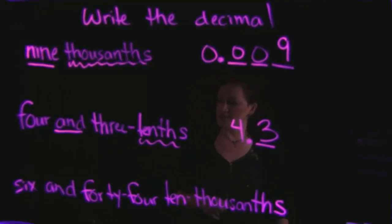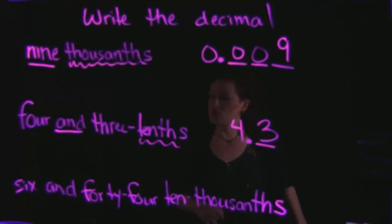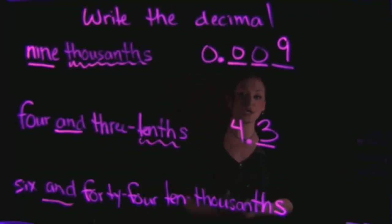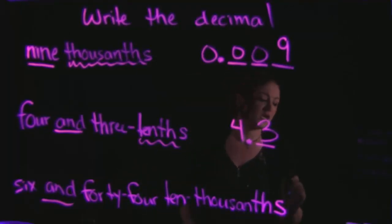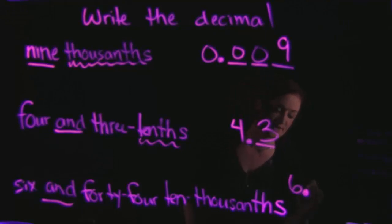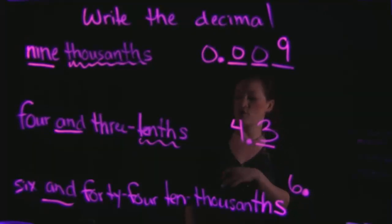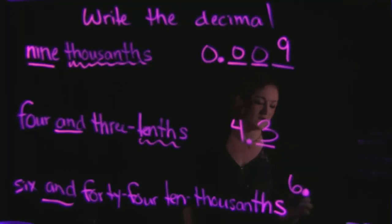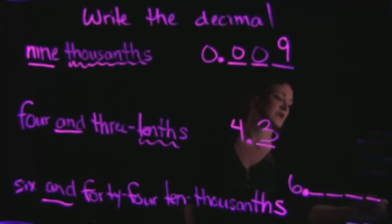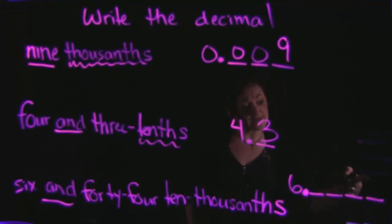Our last example is six AND 44 ten-thousandths. We have the word AND, so we are looking at a number to the left of the decimal, and that is a six. So we have six AND, which signifies our decimal point, then 44 ten-thousandths. We need to figure out where the ten-thousandths spot is: tenths, hundredths, thousandths, ten-thousandths. So the number 44 needs to end in that ten-thousandths place value.